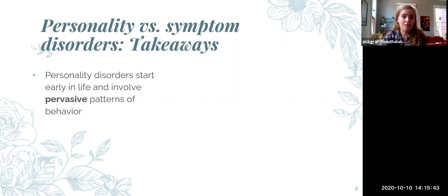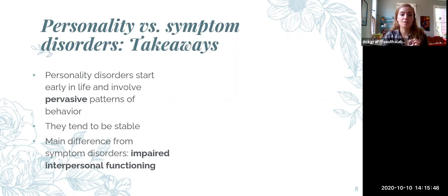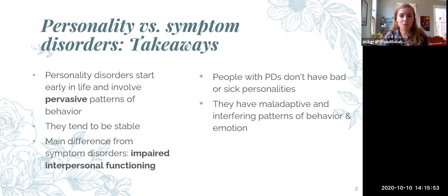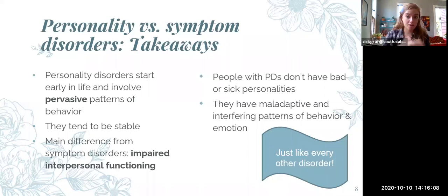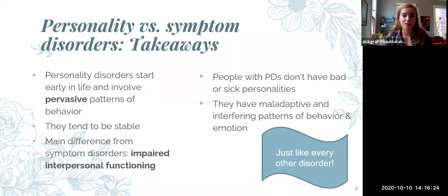Personality disorders start early in life and involve pervasive patterns of behavior. They tend to be stable over time, but the main difference from symptom disorders is impaired interpersonal functioning. It's important to remember that people with personality disorders aren't bad people — they don't have bad or damaged personalities. What they have is maladaptive and interfering patterns of thought, behavior, and emotion — exactly the same as every disorder we've talked about. The process of interpreting the world and one's place in it influencing behavior is also happening in personality disorders; the difference is that these patterns are more stable, pervasive, and involve more interpersonal impairment.